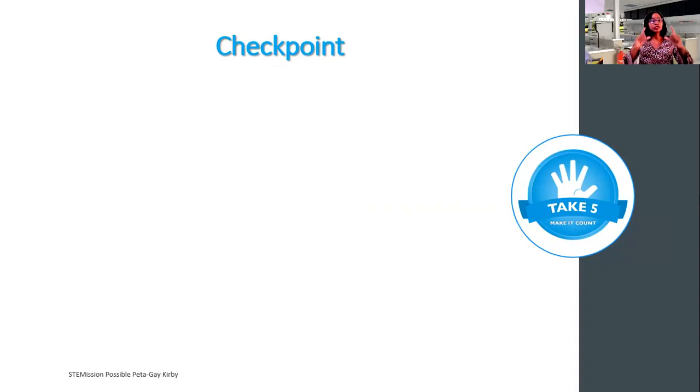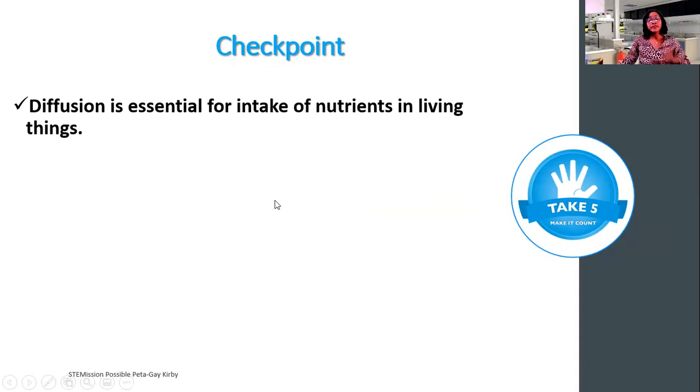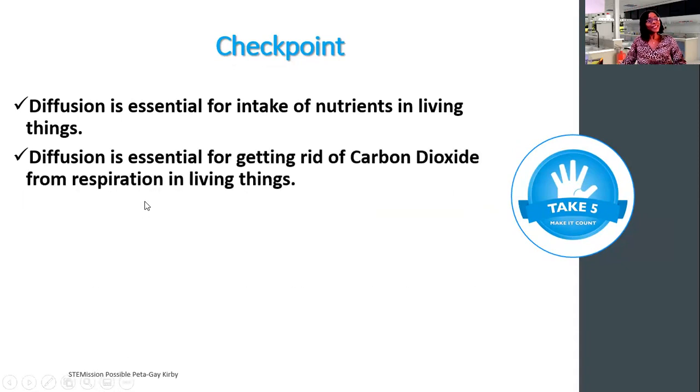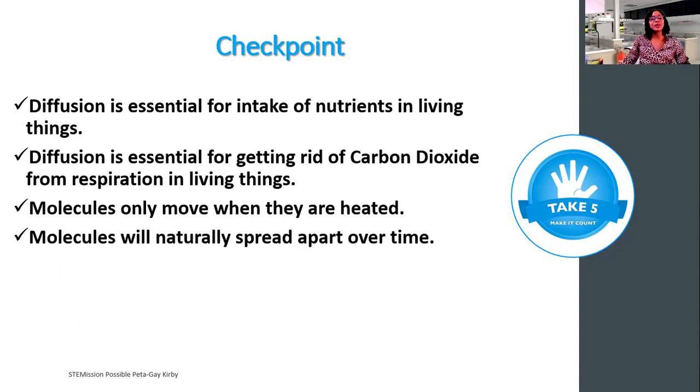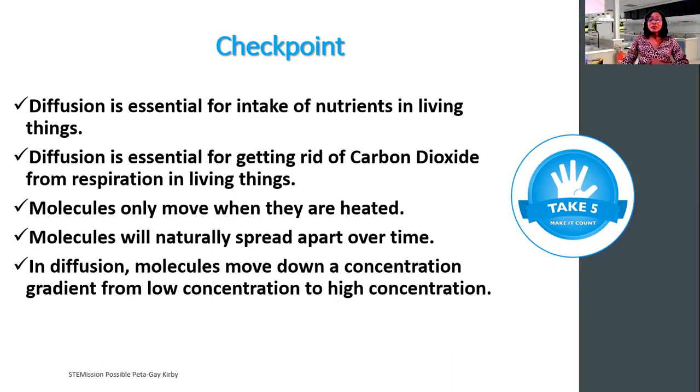We have gone through the introduction to diffusion, and we will therefore stop at our take five and make it count checkpoint segments. You will get five questions. These are either true or false. Diffusion is essential for intake of nutrients in living things. Diffusion is essential for getting rid of carbon dioxide from respiration in living things. Molecules only move when they're heated. Molecules will naturally spread apart over time. In diffusion, molecules move down a concentration gradient from low concentration to high concentration. Are you ready to take five and make it count?